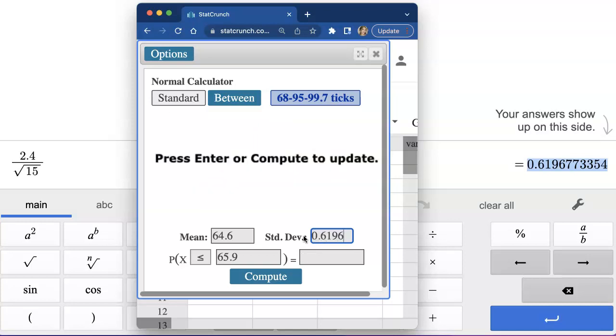And you know, this is an intermediate answer, so you can try to be as accurate as you can. I'm just going to copy down the whole thing. Let me start again. 0.6196773354. And then let me hit compute.